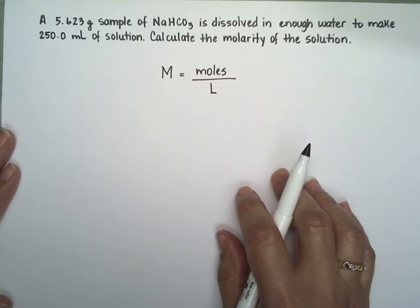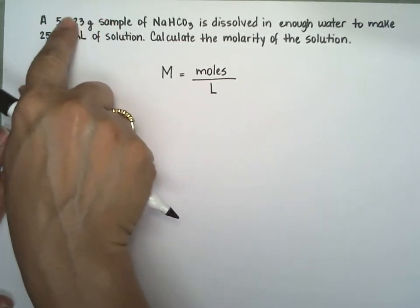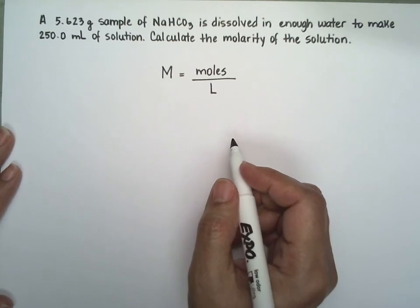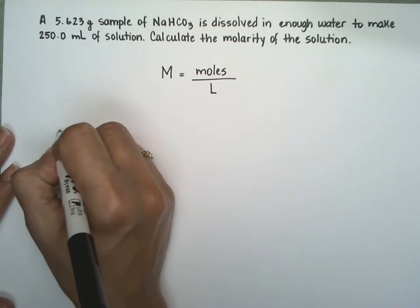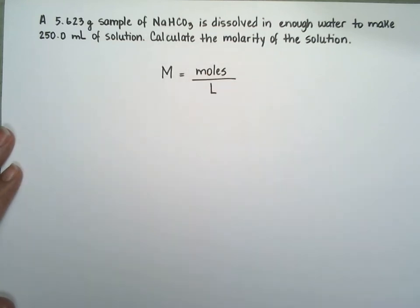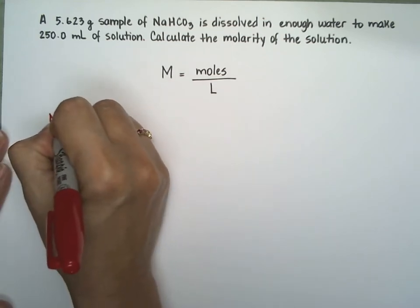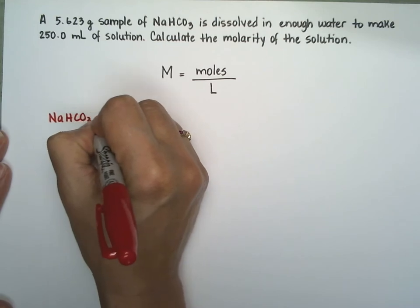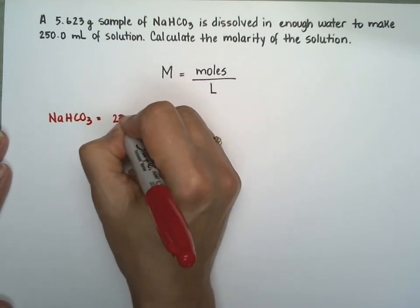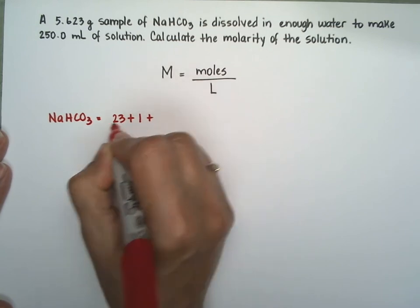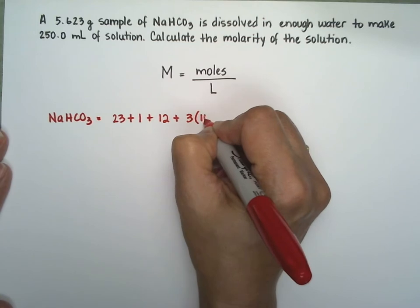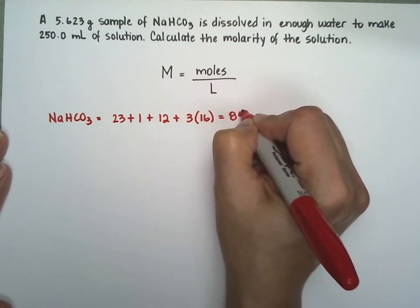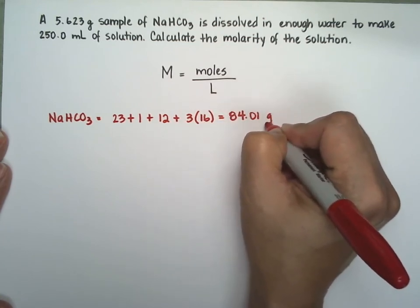So what do we need? We need to convert the grams of the carbonate into the moles of carbonate. So let's go ahead and do that. If you wanted to calculate the molecular weight of the carbonate, you have sodium is 23, hydrogen is 1, carbon is 12, each of the three oxygens is 16, so that gives you 84.01 grams per mole.